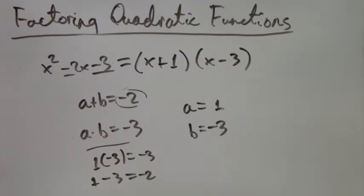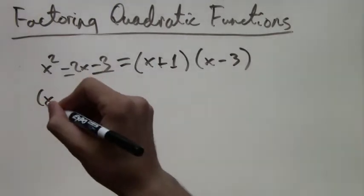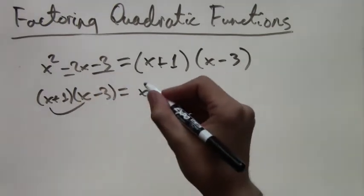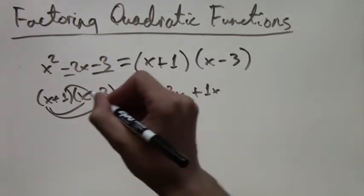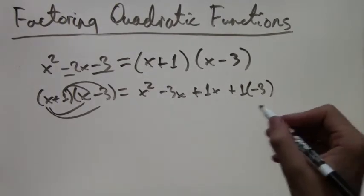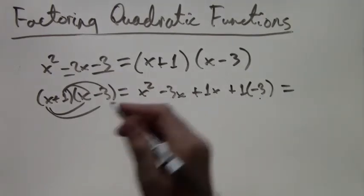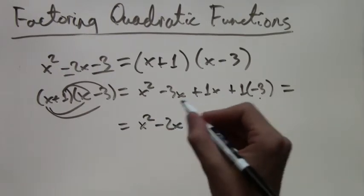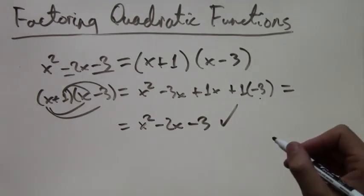And again, we can foil this out and make sure all our work was right, and we'll get the same equation we started with. So x plus 1 times x minus 3 equals x squared minus 3x plus 1x, and then plus 1 times negative 3, which is negative 3. So when we simplify this, negative 3x plus 1x combines to negative 2x, so we have x squared minus 2x, and then negative 3, because 1 times negative 3. So it's right.